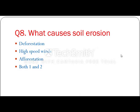What causes soil erosion? The options are: deforestation, high speed winds, afforestation, or both one and two. The answer is both one and two — deforestation and high speed winds cause soil erosion.